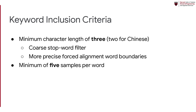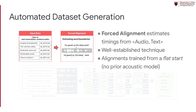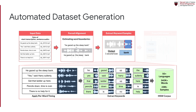Except for Chinese, we use a minimum character length of 3 as a coarse stop word filter for our inclusion criteria, and we ensure a minimum of 5 audio clips per word. Our keyword extraction pipeline ingests pairs of sentence audio and text transcripts. We use forced alignment to estimate per-word timing boundaries, training our alignments directly on the data with no external acoustic models. Using the estimated timings, we apply our inclusion criteria and extract keywords into the dataset.